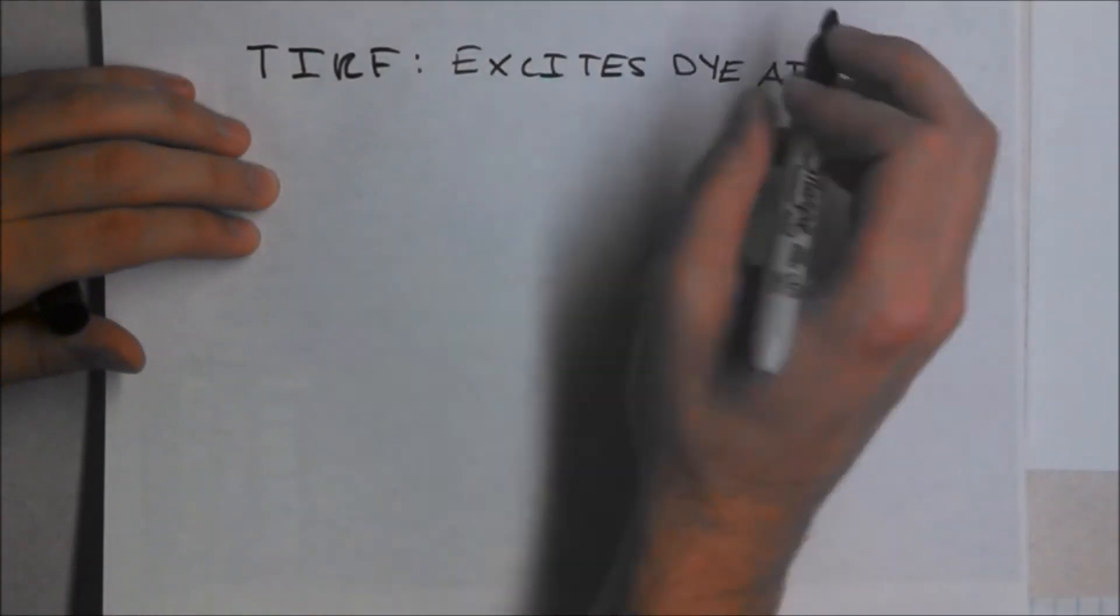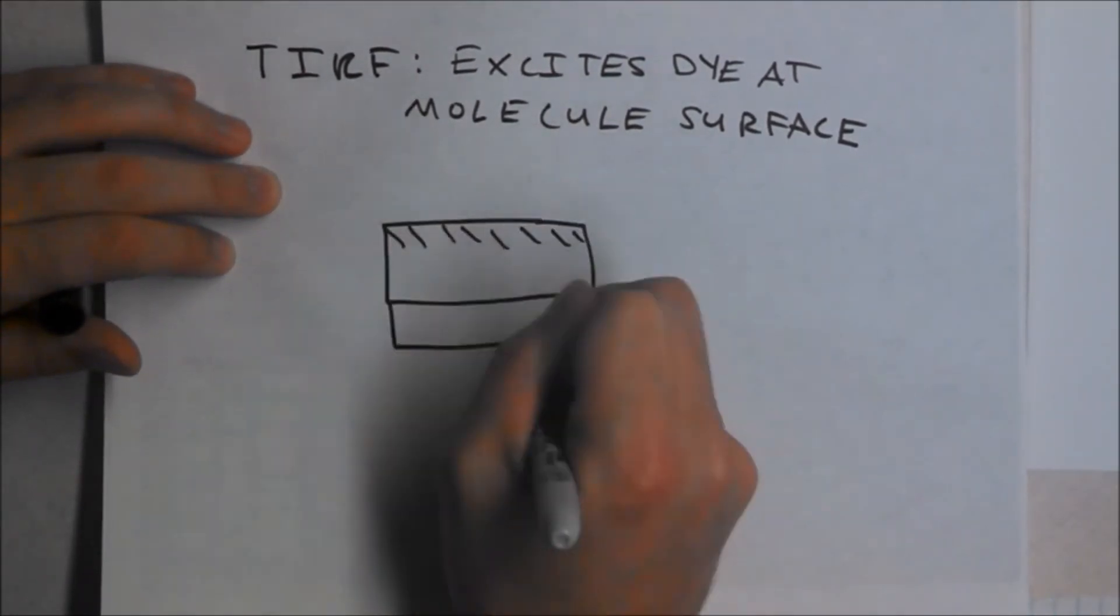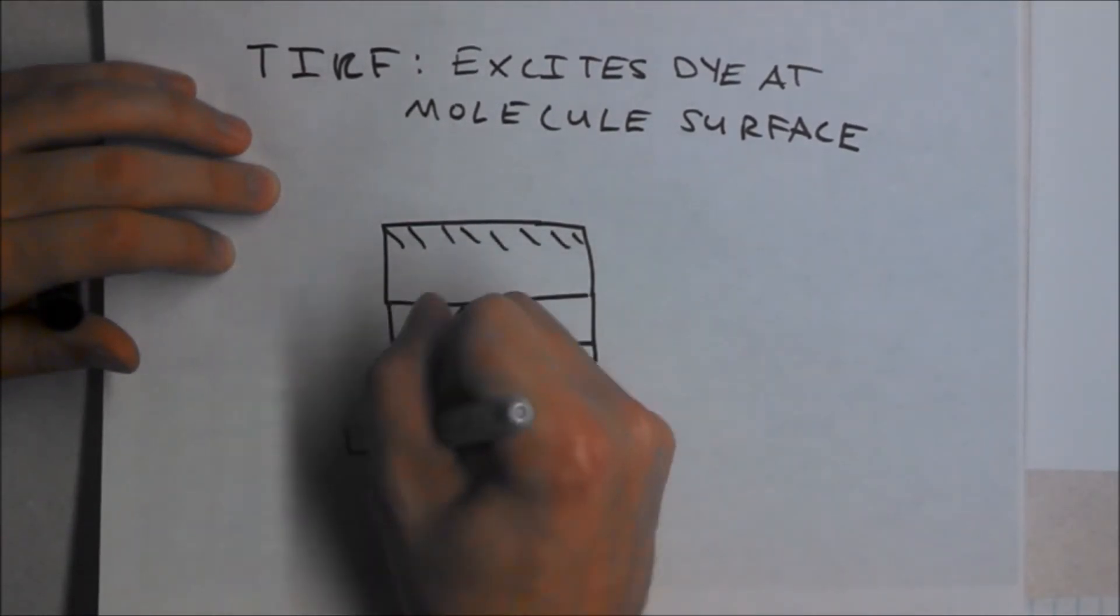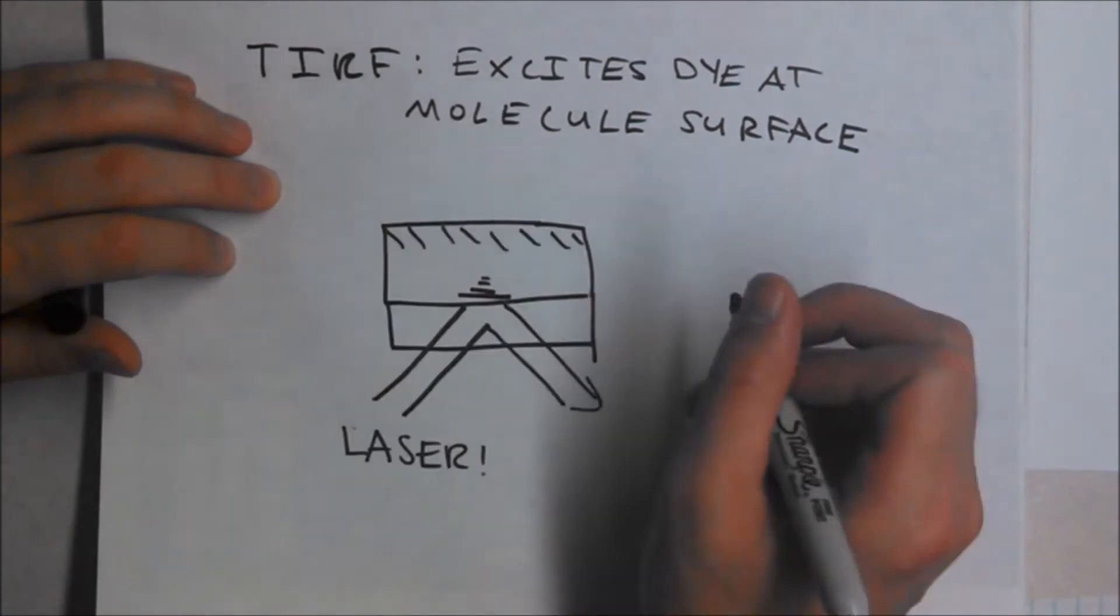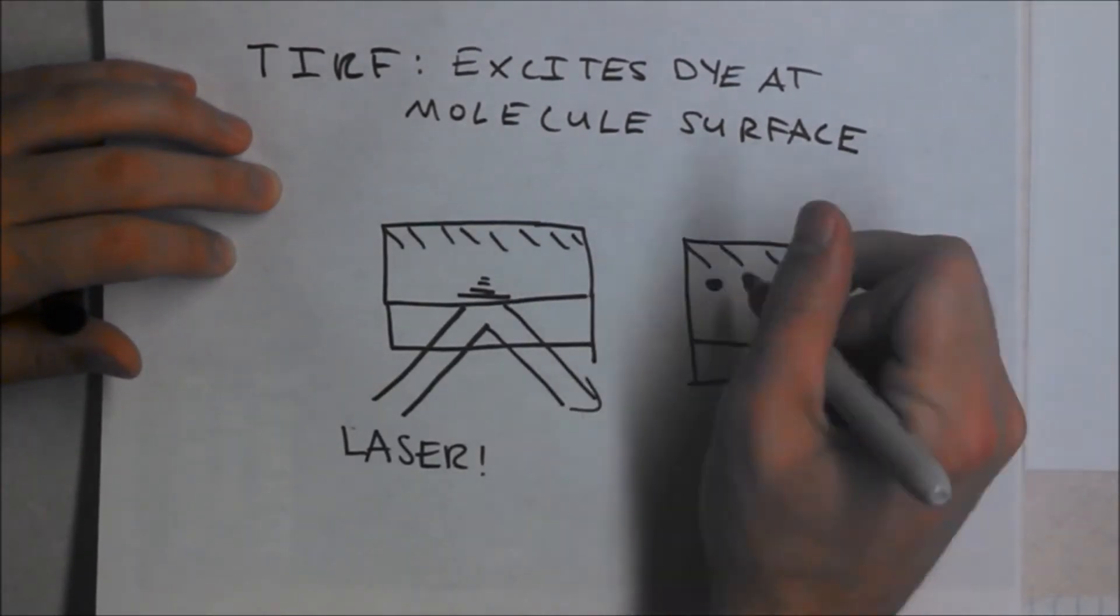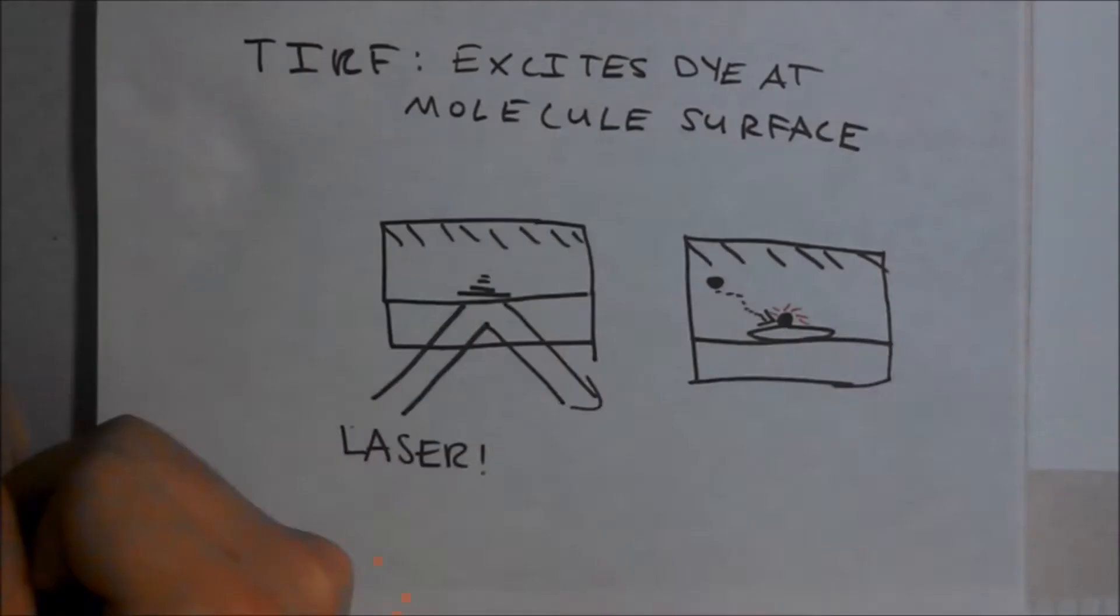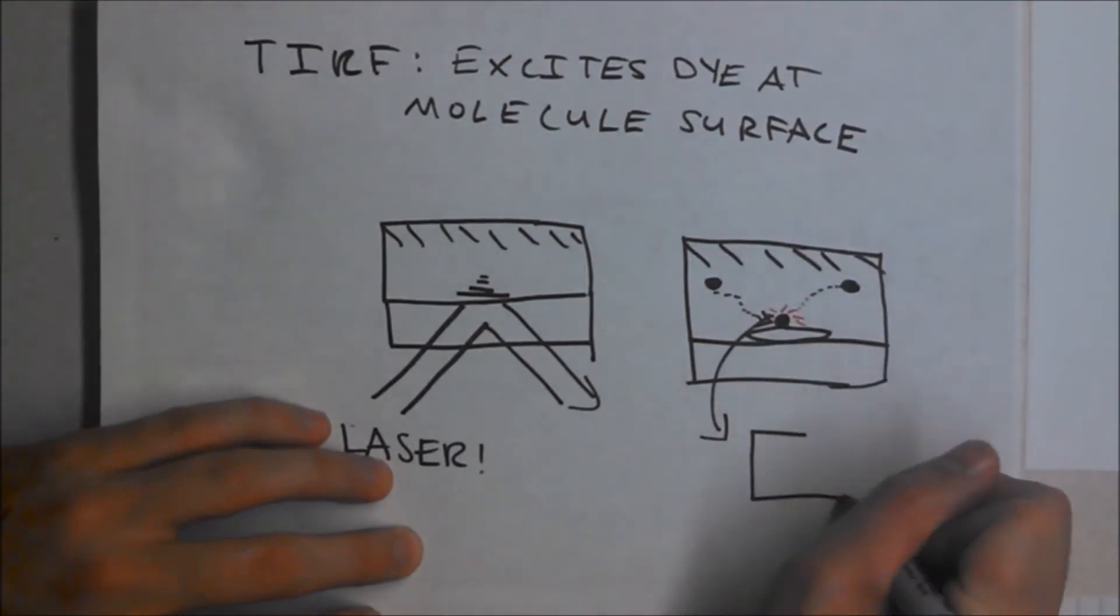For a TIRF excitation, a laser is completely reflected at the interface where particles are deposited. This creates an evanescent wave that decays roughly 100 nanometers into the sample. The evanescent wave excites the dye molecules that come close to the interface and interact with the particles.